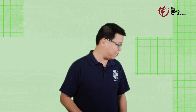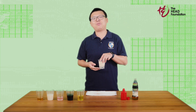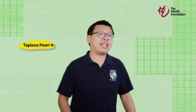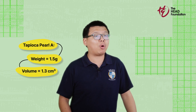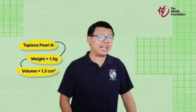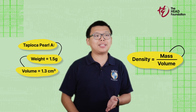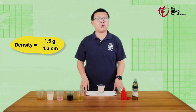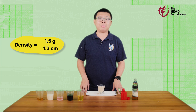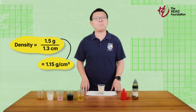Now you can ask your students this question: What do you think will happen if I pour in the rubbing alcohol with a density of 0.79 grams per cubic centimeter? Where will the rubbing alcohol go? Give your students some time to think about the answer. The rubbing alcohol will go on top of the oil because its density of 0.79 grams per cubic centimeter is less than the density of oil at 0.92 grams per cubic centimeter.